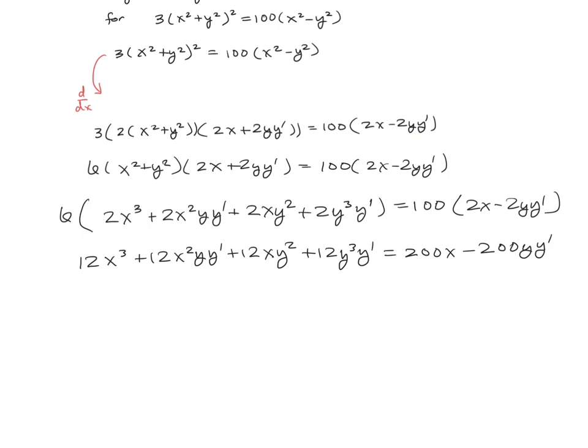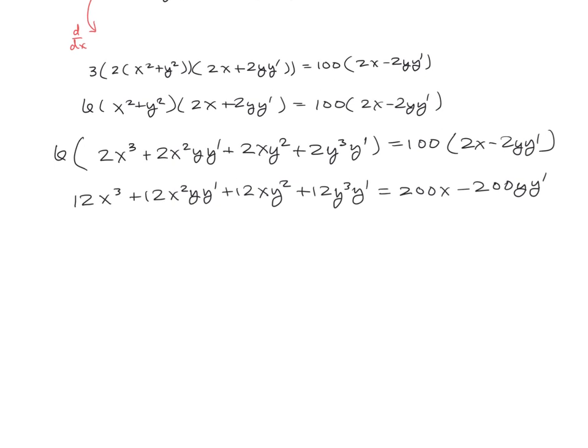And just like in our previous example, we need to isolate our y primes. So we're going to have 12x²y y prime plus 12y³ y prime already on the left side, now being joined by plus 200y y prime. On the right-hand side, we still have our 200x, and now we're bringing over minus 12x³ and minus 12xy².